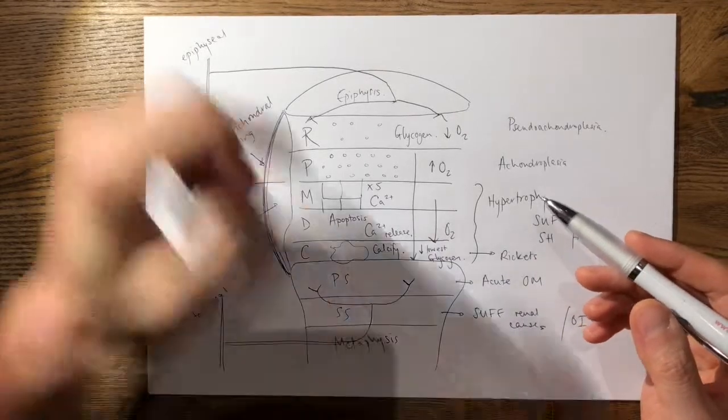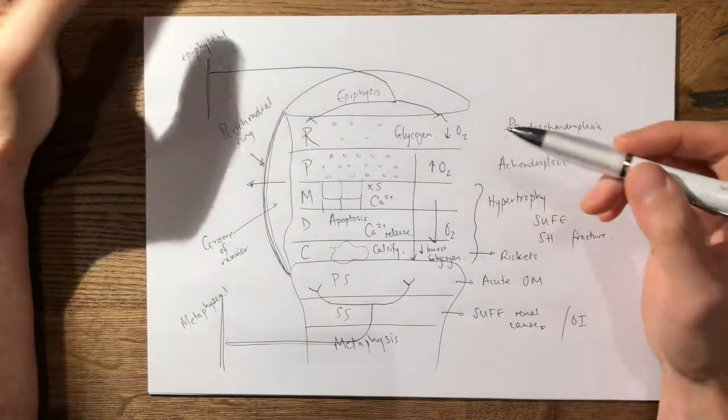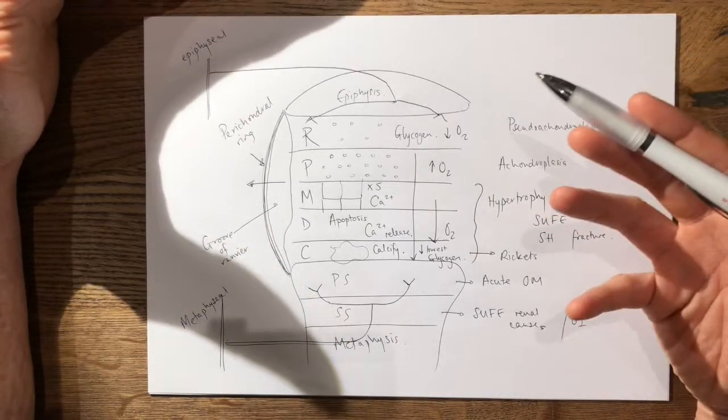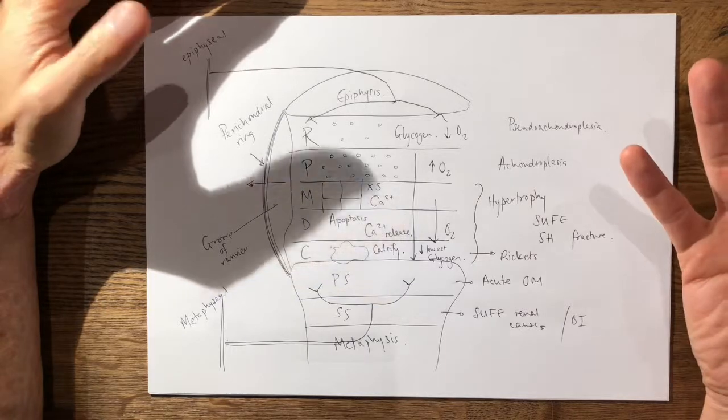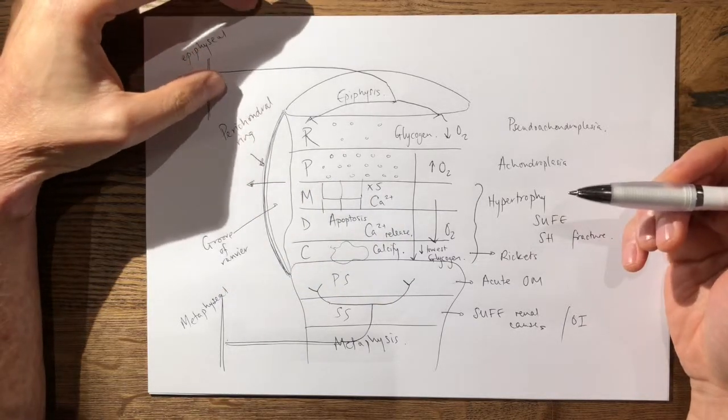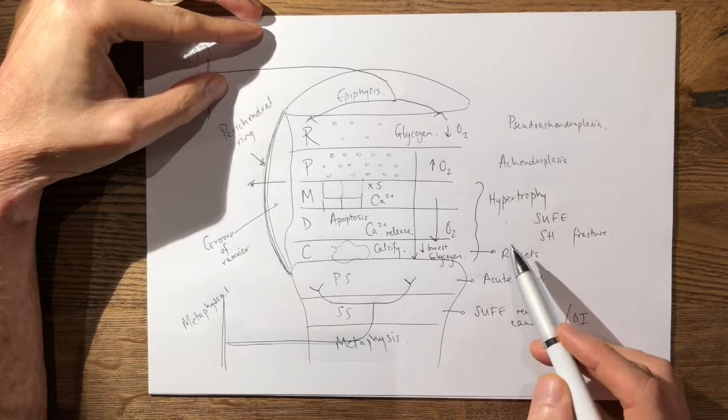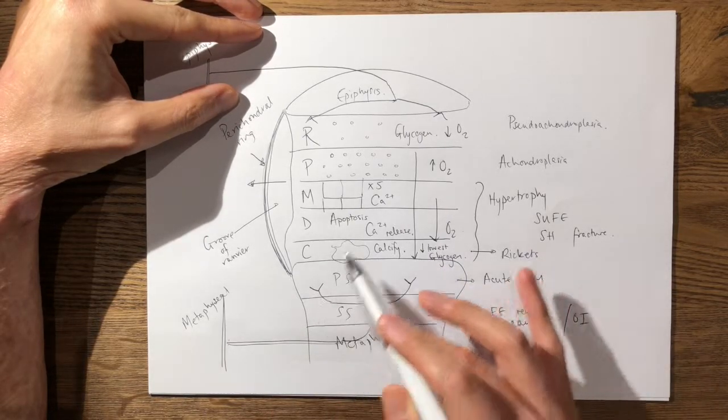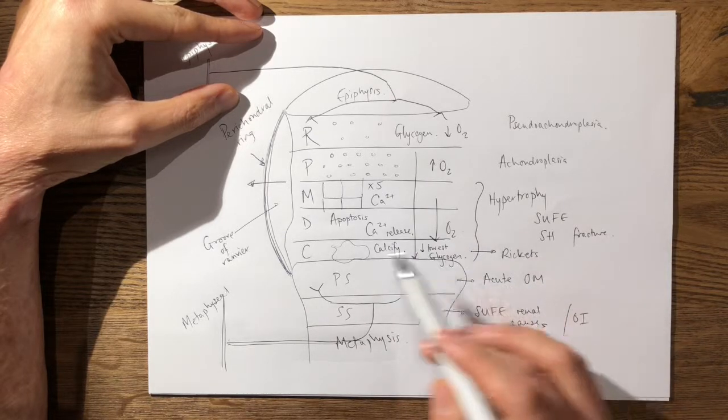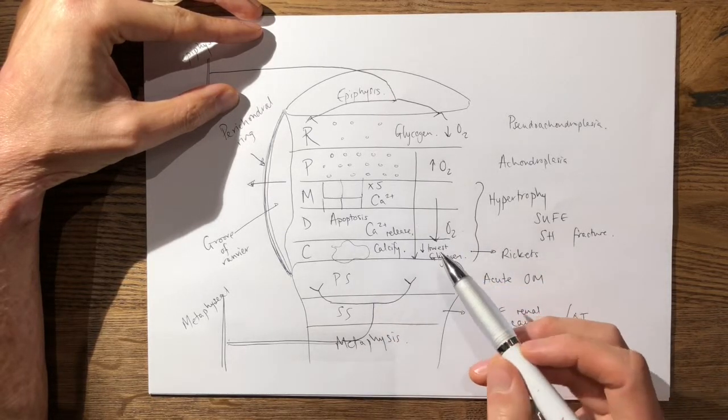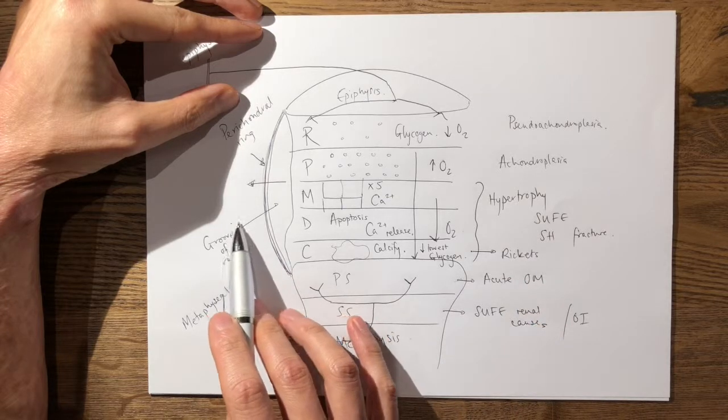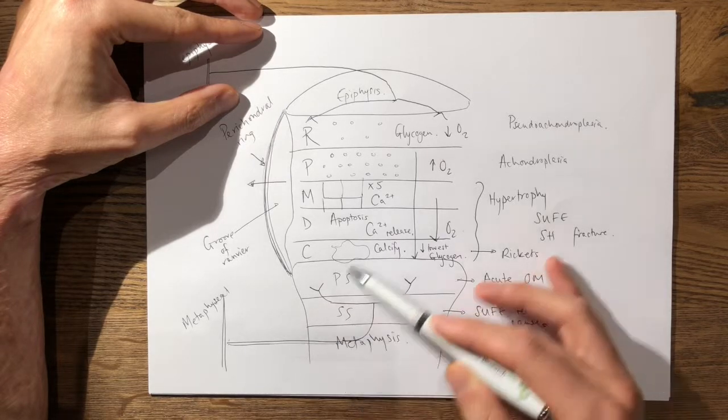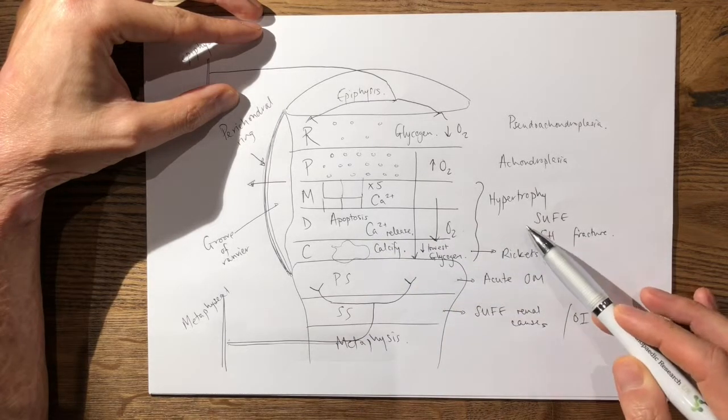The last thing to mention is that your examiner may ask you why do Salter-Harris 1 and 2 fractures have a better prognosis than Salter-Harris 3, 4, 5 fractures. The reason is because as I mentioned before, the hypertrophic layer is where the majority of your Salter-Harris fractures propagate through because this is the weakest layer. If you have a Salter-Harris 1 fracture which goes through the hypertrophic layer, or a Salter-Harris 2 fracture which takes a metaphyseal fragment and goes through the hypertrophic layer, it does not violate the resting or proliferative zone.